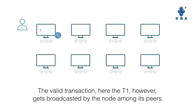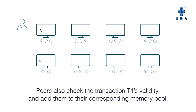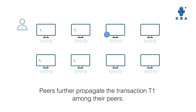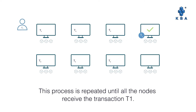The valid transaction T1, however, gets broadcasted by the node among its peers. Peers also check transaction T1's validity and add it to their corresponding memory pool. Peers further propagate the transaction T1 among their peers. This process is repeated until all the nodes receive the transaction T1.